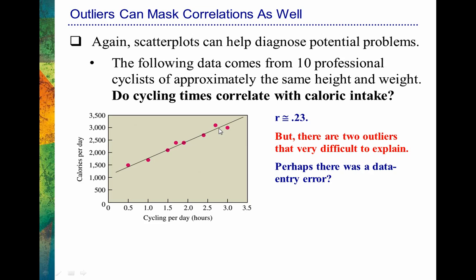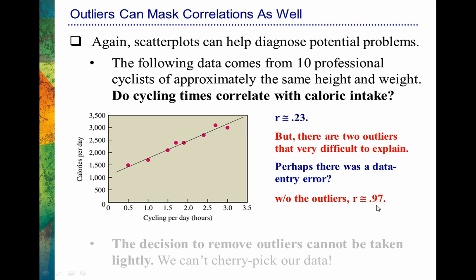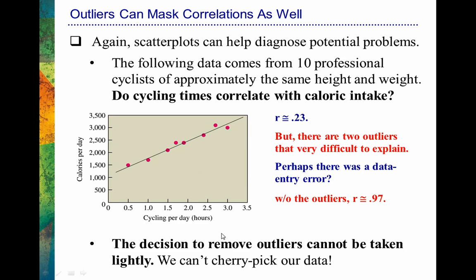Now we see a very clear trend, and these data points conform very closely to that trend line, suggesting a strong correlation. Without those outliers, the sample correlation now equals approximately 0.97 — a very strong correlation. But I want to make sure you don't get the wrong idea: the decision to remove outliers really can't be taken lightly. We can't cherry-pick our data and delete a point just because it doesn't fit our theory. The data is the data, but in this case we assumed a data entry error, and the scatter plot helped us recognize that.